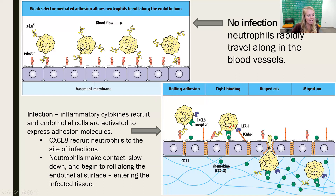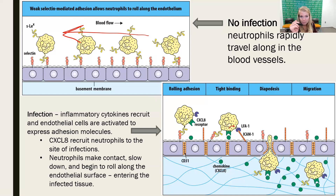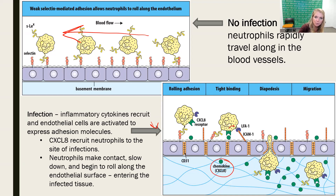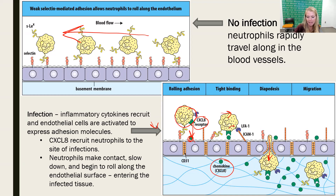There is fast movement down the blood vessel when there's no infection because there's no CXCL8 on the endothelial surface. When CXCL8 is produced by the macrophage at the site of infection, it gets displayed on the endothelial lining. The CXCL8 receptors on the surface of the neutrophil engage, slowing it down, and then it goes through diapedesis — the squeezing of the neutrophil through the endothelial cells — ending up in the infected tissue where it can begin phagocytosis.